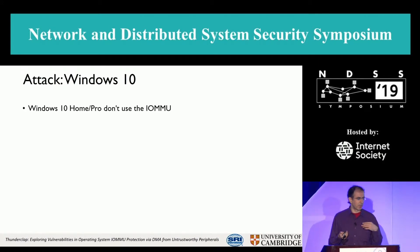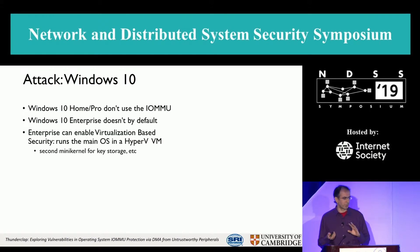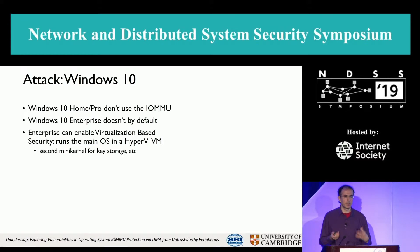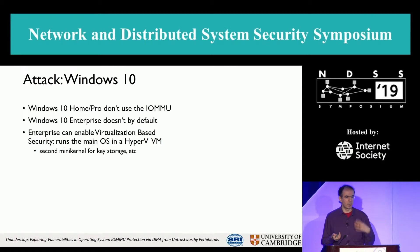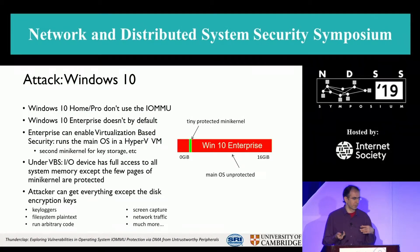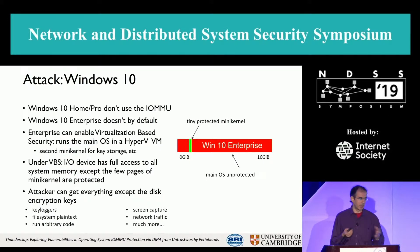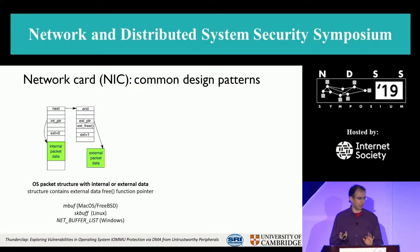On Windows 10, Home and Pro don't use the IOMMU. Windows 10 Enterprise doesn't by default, but there is an option to enable it. Enterprise can enable virtualization-based security, which runs the main OS in a Hyper-V virtual machine, alongside a mini-kernel for storing things like disk encryption keys. Under VBS, while the disk encryption keys and the mini-kernel are protected, the rest of the system is completely unprotected — attackers can have free reign: keyloggers, screen capture, reading arbitrary code — the works.